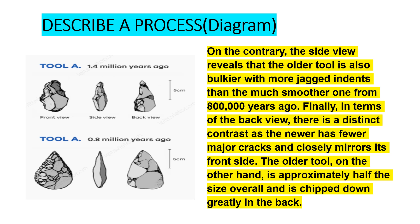On the contrary, the side view reveals that the older tool is also bulkier with more jagged indents than the much smoother one from 800,000 years ago. Finally, in terms of the back view, there is a distinct contrast as the newer has fewer major cracks and closely mirrors its front side. The older tool, on the other hand, is approximately half the size overall and is chipped down greatly in the back.